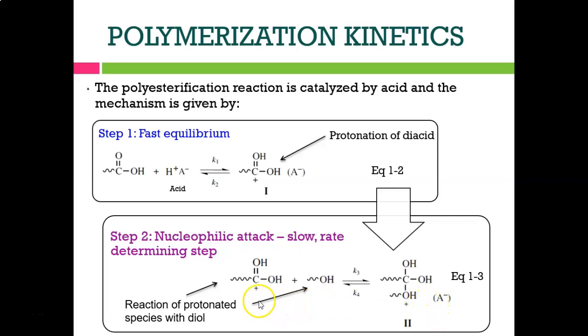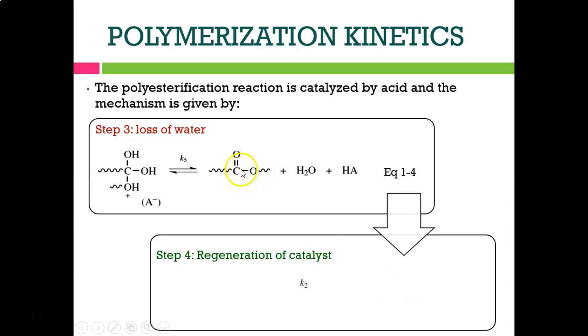In step 3, after the reaction of the protonic species with the diol, it tends to produce triol. Triol means it contains 3 OH groups. In step 3, the loss of water occurs when the reversible reaction involves rate constant k5, producing C double bond O. The OH groups are removed. This is the regeneration of the catalyst, producing CO plus HA. H plus A is the protonic acid.